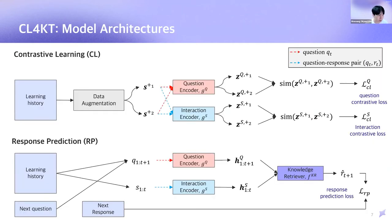So let me show the diagrams for the model architectures of CL4KT. As we've seen before, in the contrastive learning part, data augmentation is applied to a learning history to generate correlated views of the original one, which are S plus 1 and S plus 2. Then, these augmented learning histories are fed into question and interaction encoders, respectively. So after that, we can obtain question-level representation, GQ, and interaction-level representation, ZS. Next, for each level, we calculate the similarity between the representations of two augmented views here. Finally, we use the cross-entropy loss to make contrastive loss for questions and interactions, respectively.